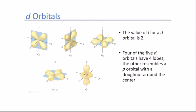For d orbitals, L=2, so M sub L equals negative 2, negative 1, 0, 1, and 2 — five different orientations. When the wave function is solved, most d orbitals look like four-leaf clovers oriented along different planes. The fifth d orbital, d_z², looks like a p orbital with a donut around the middle.